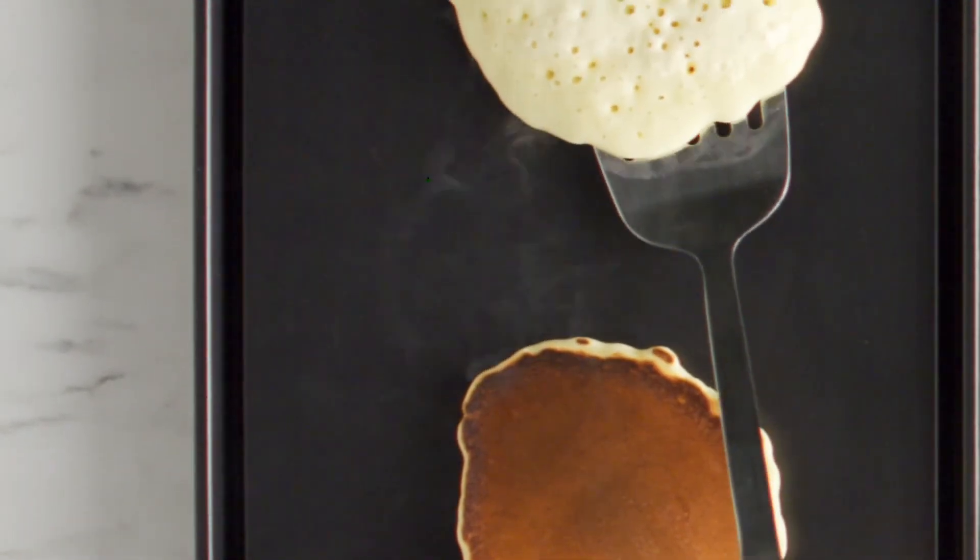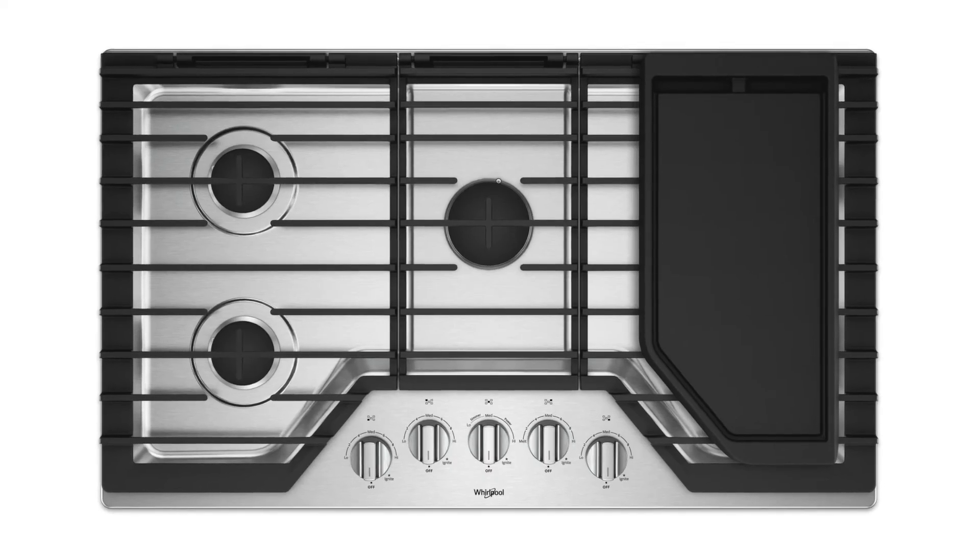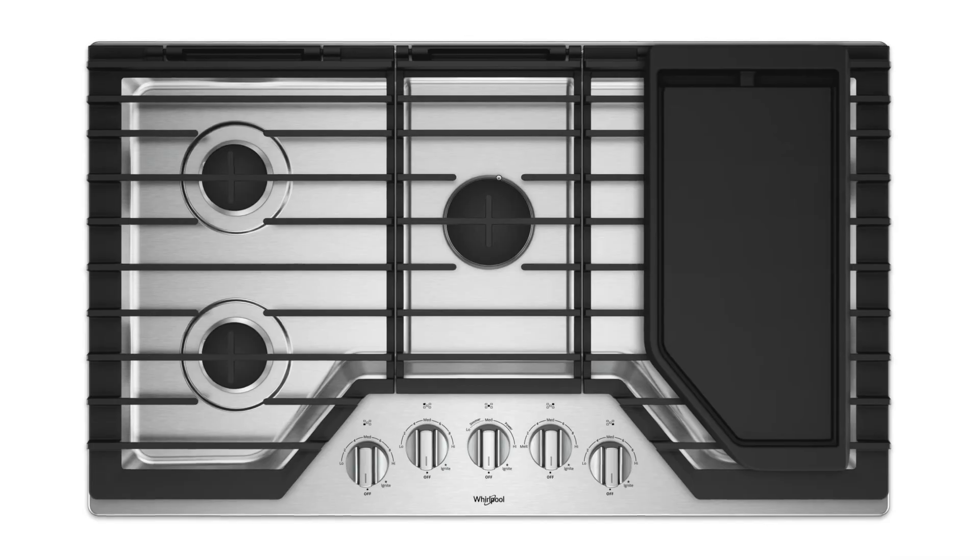For best results when cleaning a griddle, use a soft cloth or non-scratch sponge and a mild detergent. Rub in the direction of the grain to avoid damaging the surface.